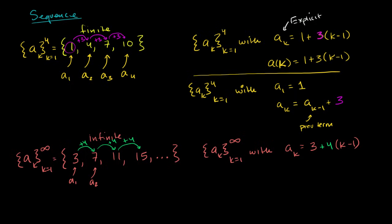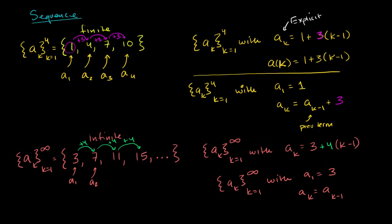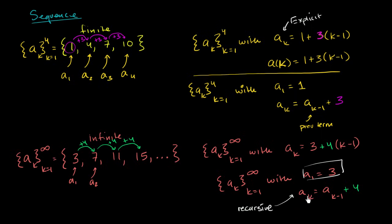How would we do this for the infinite sequence? We could write a sub k starting at k equals 1 going to infinity, with a sub 1 equal to 3, and every successive term a sub k equal to a sub (k minus 1) plus 4. You start at 3, and if you want the second term, it's the first term plus 4 — 3 plus 4 gives you 7 — and you keep adding 4. This right over here is a recursive definition: we start with a base case, and then every term is defined in terms of the term before it.